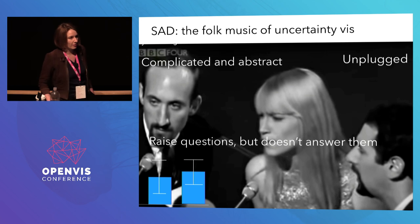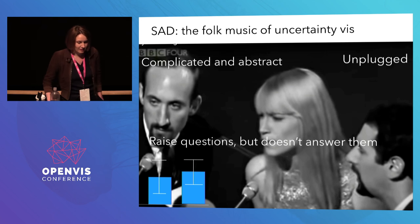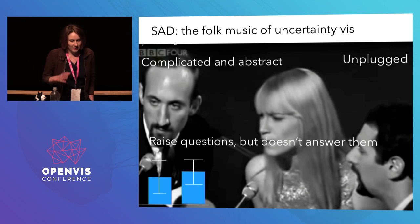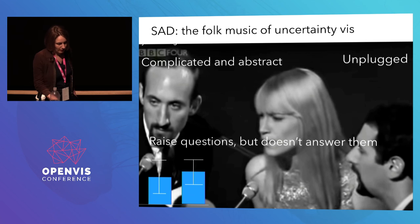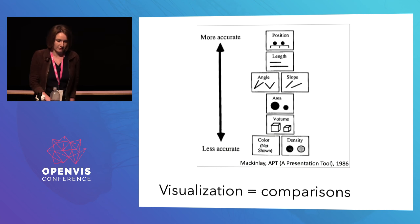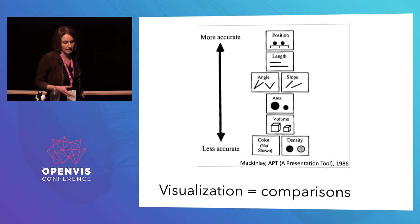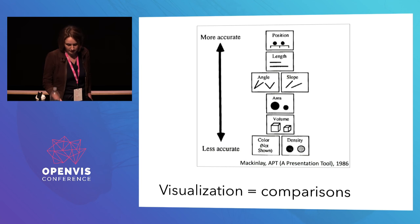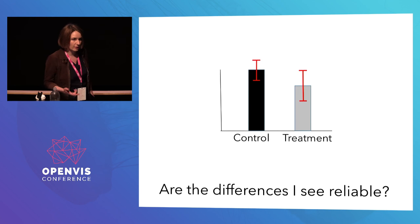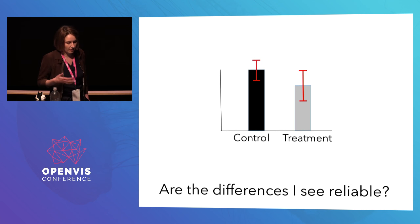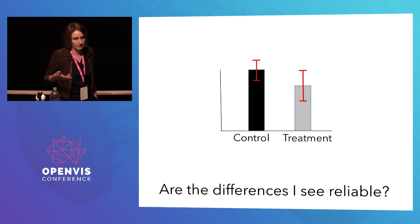Finally, folk music often raises questions and then doesn't answer them. Similarly, when we see things like error bars on visualizations, there are questions we want to answer that we can't. Visualization is about comparison — putting data in front of people so they can accurately compare values. When we put a bar chart with error bars in front of people, they want to look at the differences and ask: are these differences reliable? Are they likely to repeat if I did this study again? But they can't make that judgment.